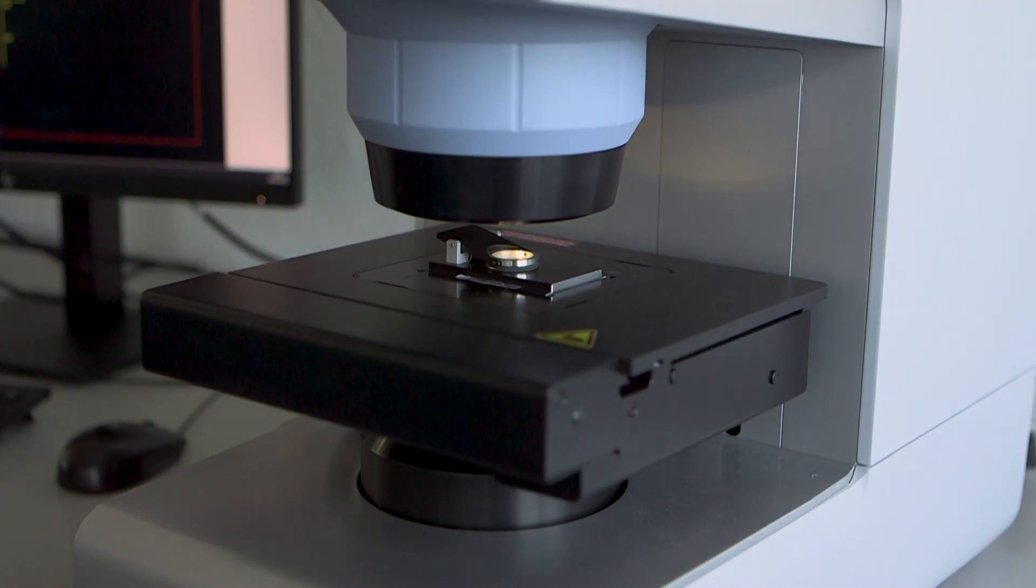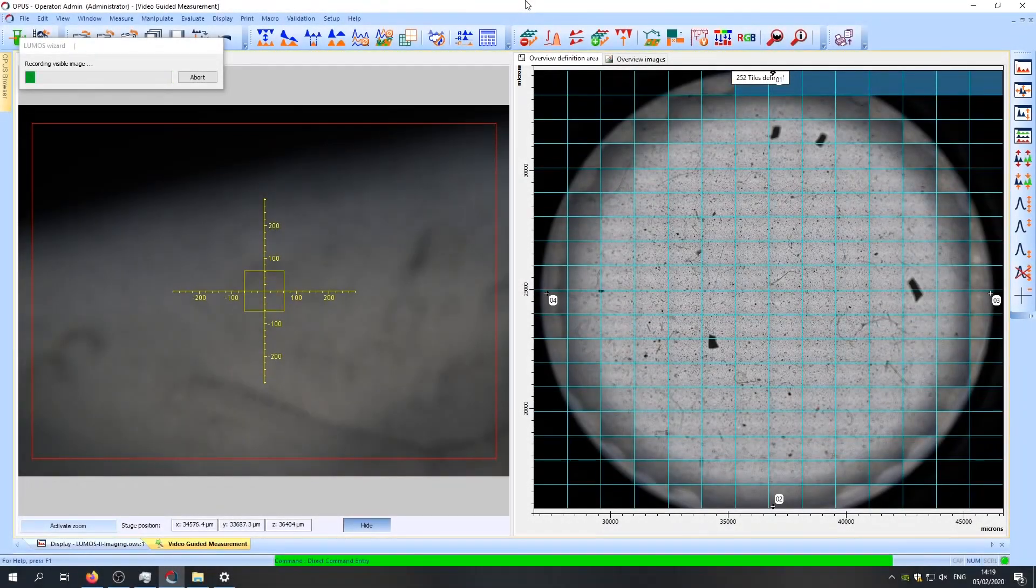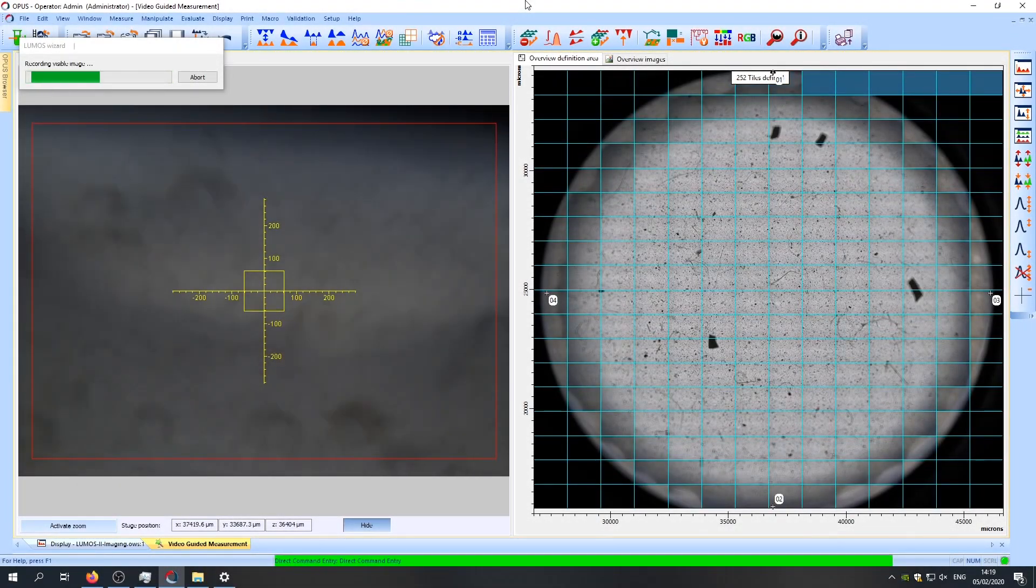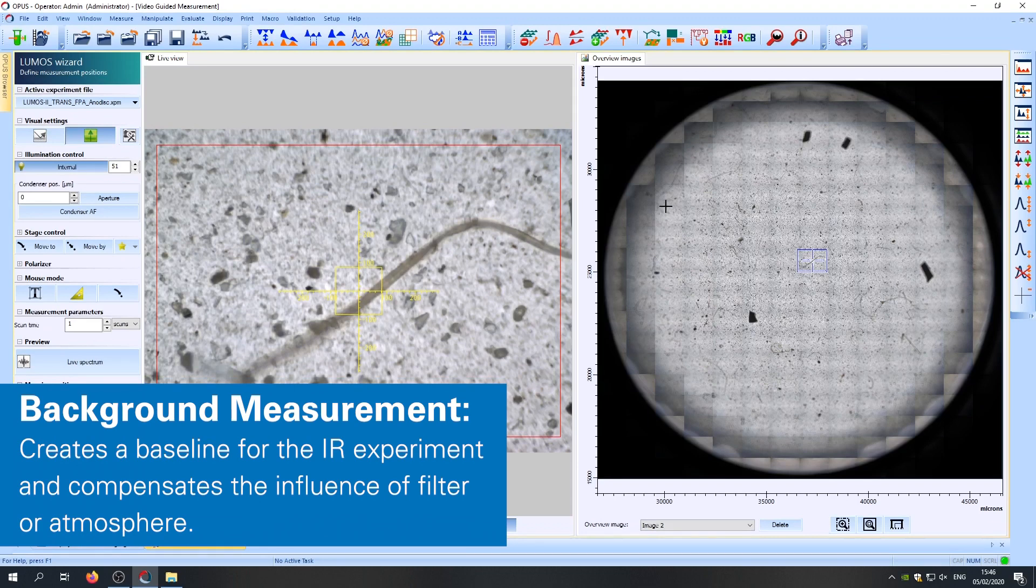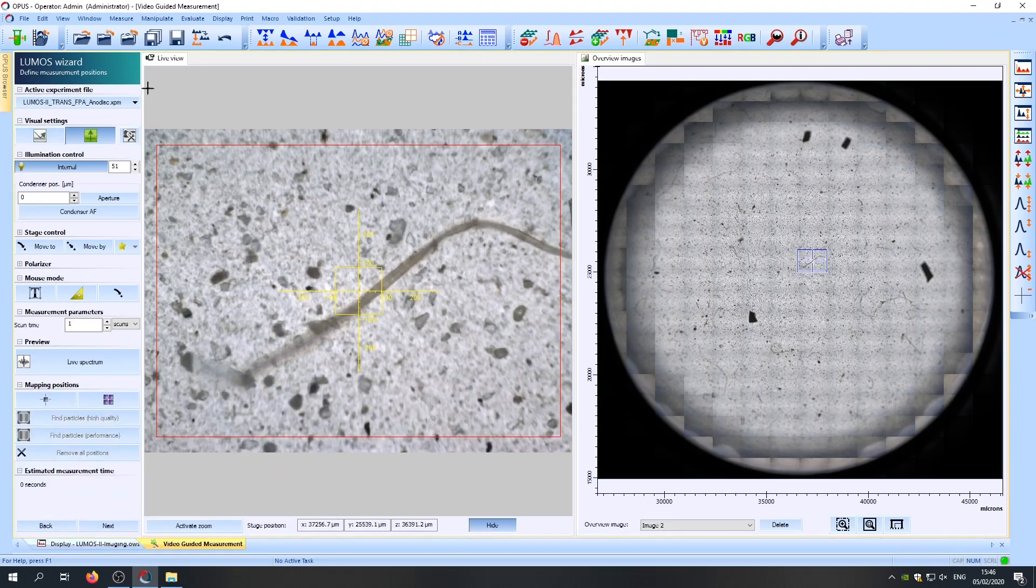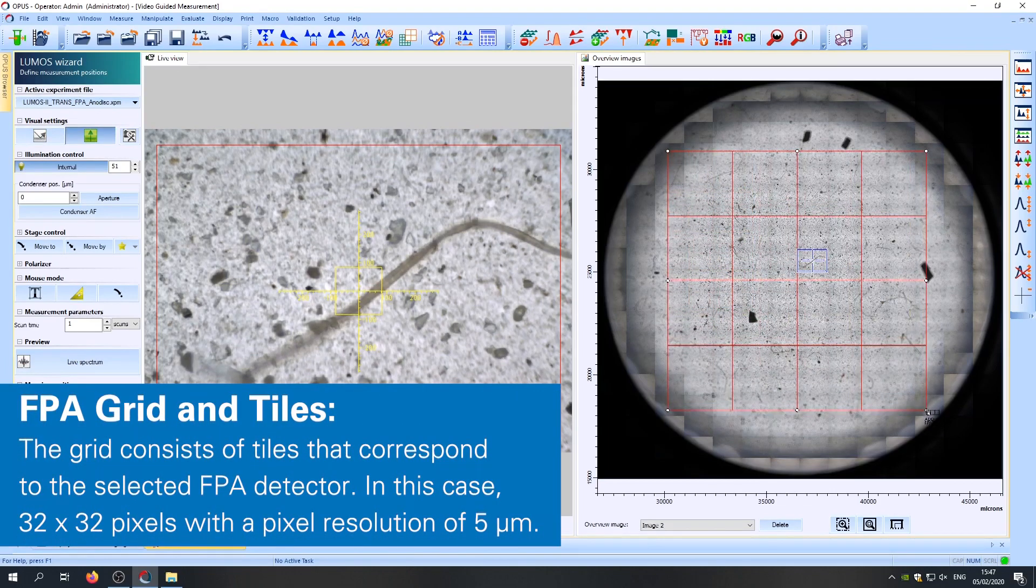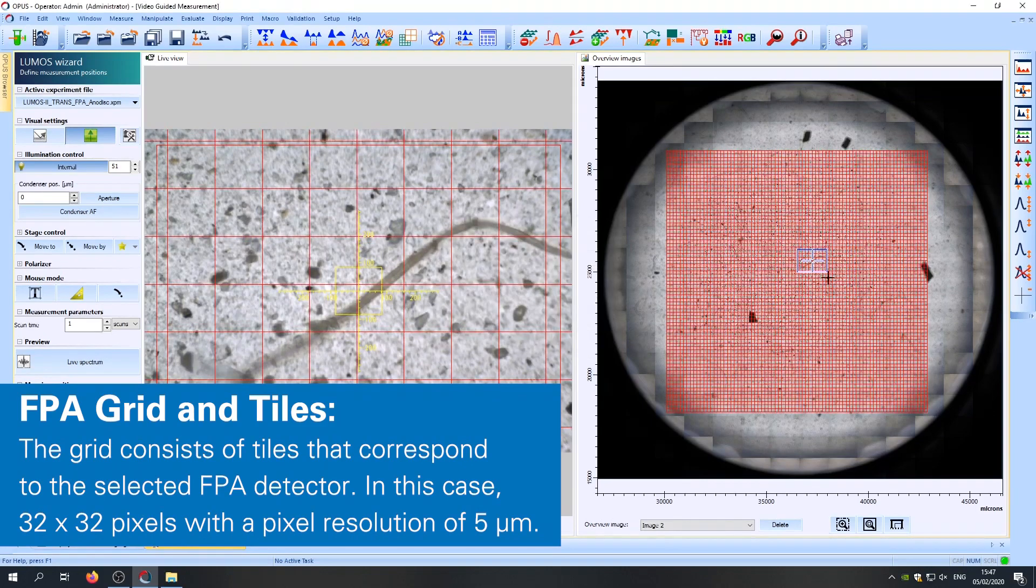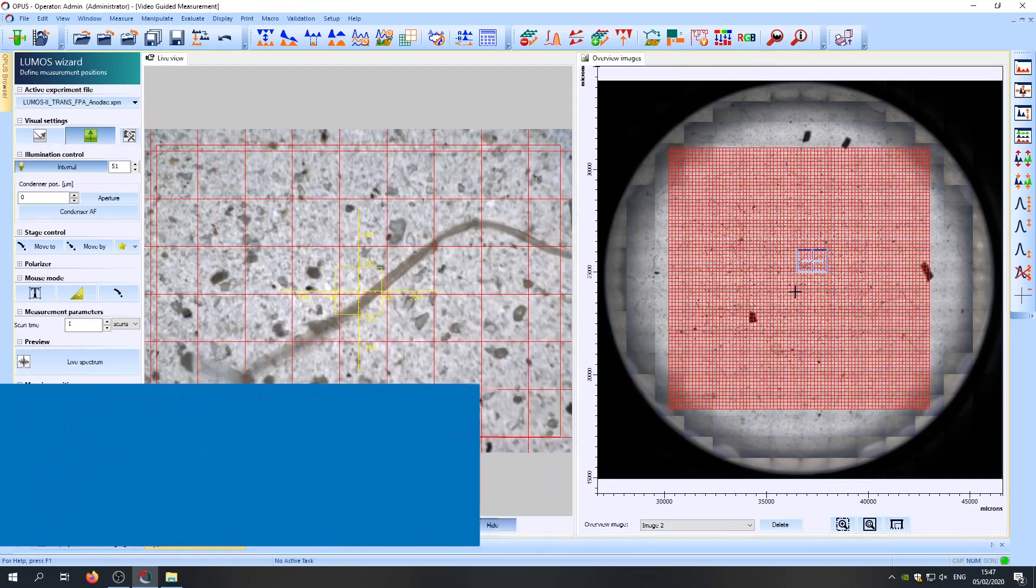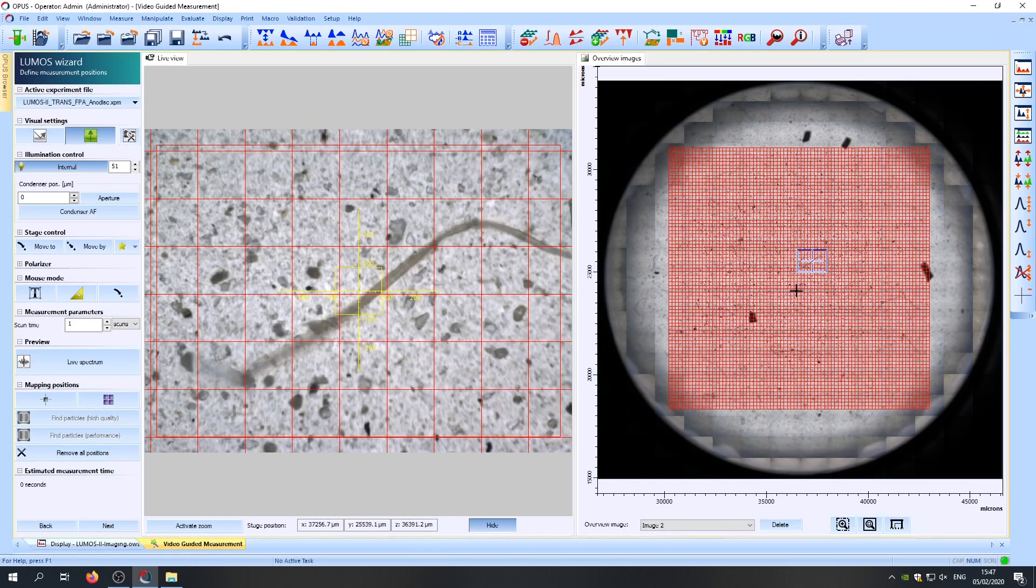When the recording of the overview image is done, we're going to go and define our measurement area. After we have collected the background, all we need to do is define the measurement area. Our parameters have been set to predefined values and can be changed here. Now we just place an FPA grid over the area we want to cover and the software will give us the corresponding number of tiles we need. Each tile consists of 32 by 32 pixels and has a spatial resolution of 5 microns without binning.